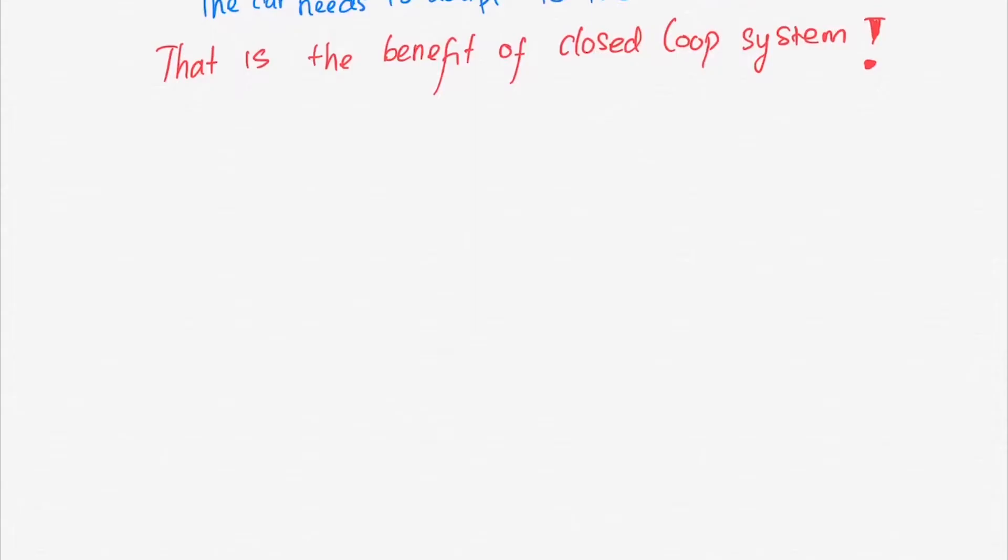This is the third part of our series of basic control system lectures. Remember that our measures of performance of control systems are transient response and steady-state error. But it will be useless talking about those things if our system is unstable. So let's talk about stability.